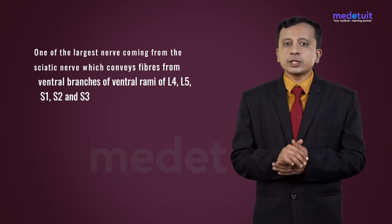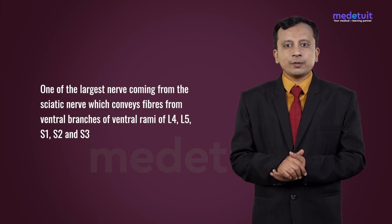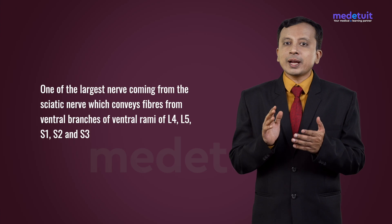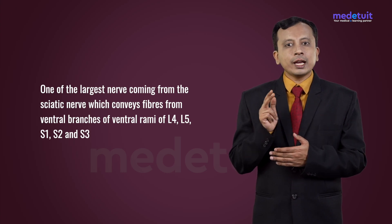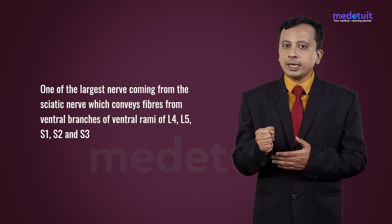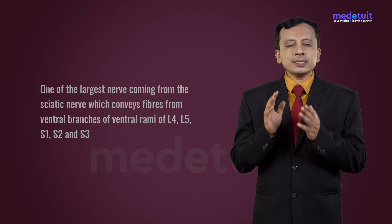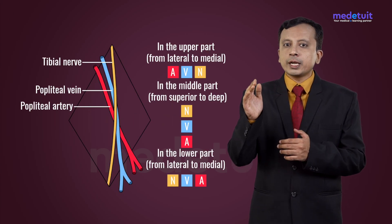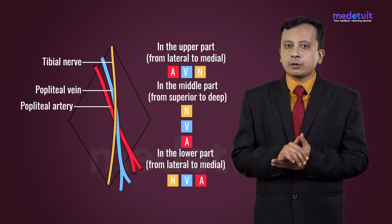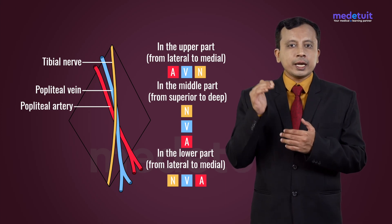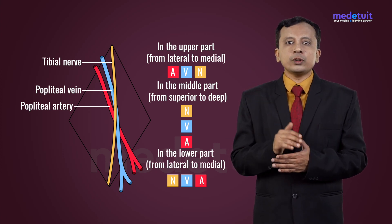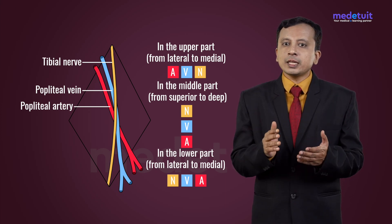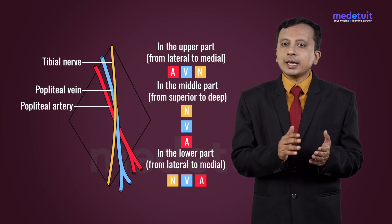The tibial nerve is one of the largest nerves arising from the sciatic nerve. It conveys fibers from ventral branches of the ventral rami of L4, L5, S1, S2, and S3. This nerve passes vertically downwards from the upper angle of the popliteal fossa towards the lower angle of the popliteal fossa. As it comes down, it crosses superficially to the popliteal vessels, with the popliteal vein lying between the popliteal artery and the nerve.